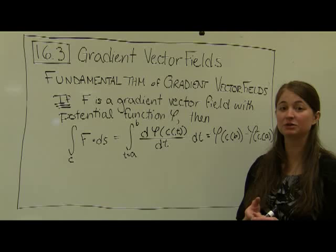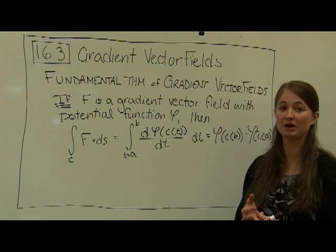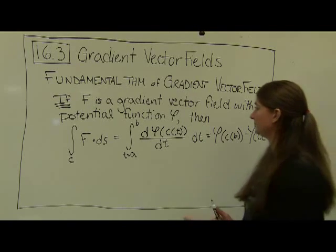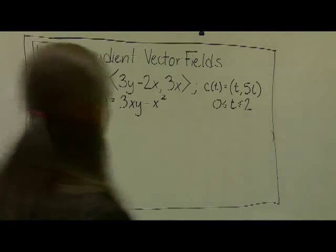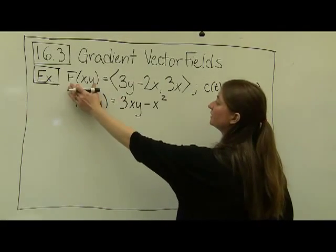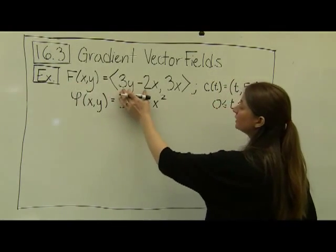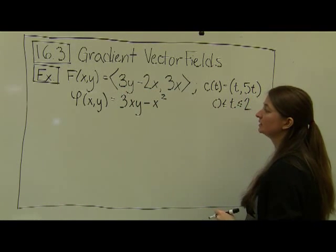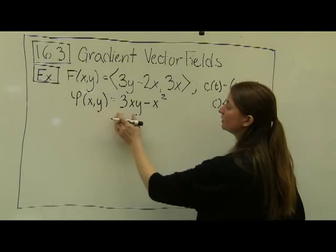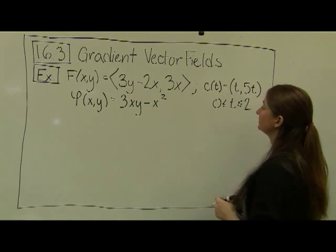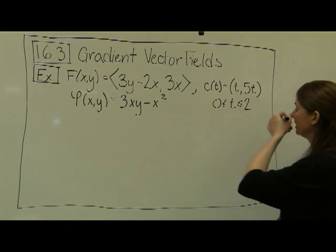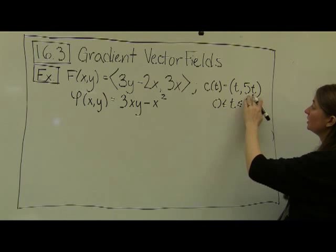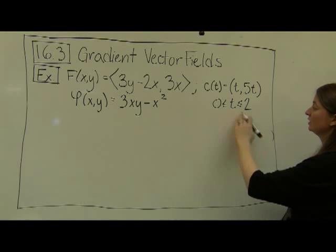Let's look at an example. Say we have a vector function F given by (3y − 2x) for the first component and 3x in the second component. It has a potential function φ(x,y) = 3xy − x². Our path is c(t) = (t, 5t) as t goes from 0 to 2.